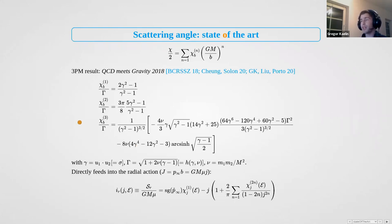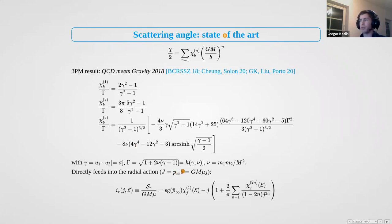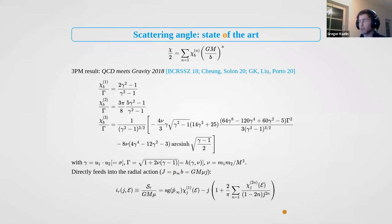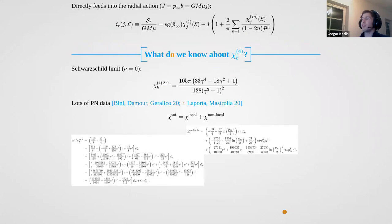What can you do with this scattering angle? We can use this analytic continuation that you heard about from Rafael — I'm going to swap from b-space, the impact parameter space, to angular momentum space. I simply plug this chi into my master formula and I get my radial action. Through that I can immediately reuse the scattering angle for whatever I want in the bound problem. We already know a few things about this, so that's my main quantity I want to study today.